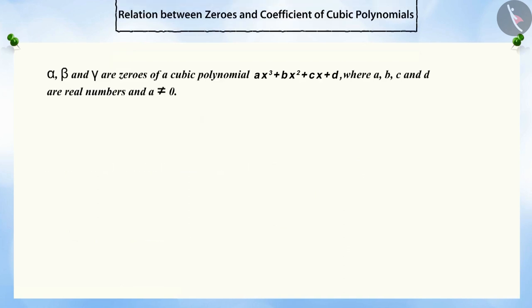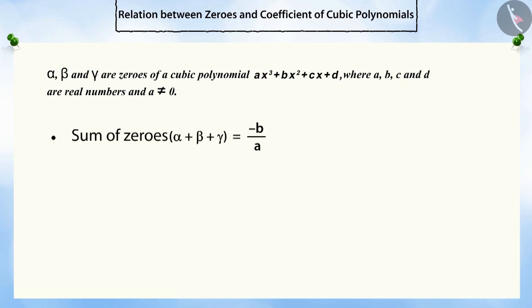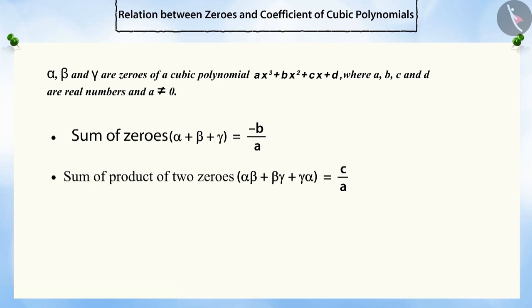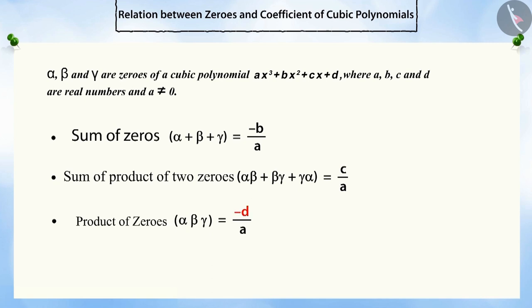Similarly, if alpha, beta, and gamma are zeros of a cubic polynomial AX cubed plus BX squared plus CX plus D, then the sum of the zeros is minus B by A, the sum of the product of two zeros is C by A, and the product of all zeros is minus D by A.